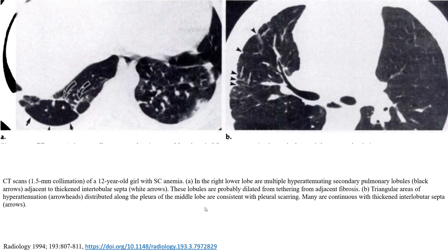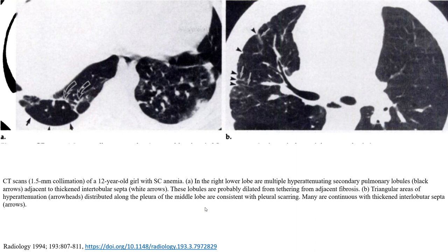CT scans of a 12-year-old girl with sickle cell anemia. In image A on the right, the lower lobe shows multiple hyperattenuating secondary pulmonary lobules, black arrows indicated, adjacent to thickened interlobular septa, white arrows indicated. These lobules are probably dilated from tethering by adjacent fibrosis. Image B shows a triangular area of hyperattenuation, arrows indicated, distributed along the fissure of the middle lobe, consistent with fissural scarring. Many are continuous with thickened interlobular septa, arrows indicated.